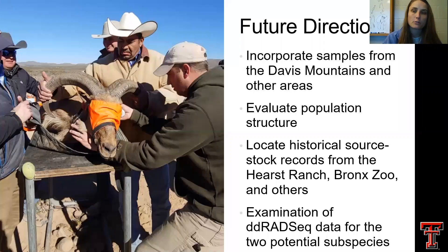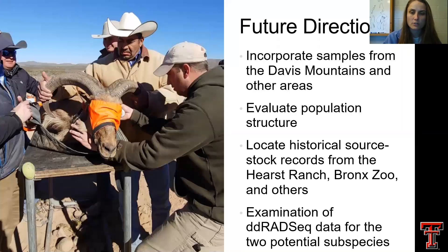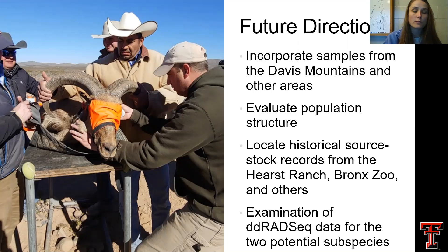Future directions are to incorporate samples from the Davis Mountains, the Glass Mountains, and other areas; evaluate population structure such as FST values using AMOVA as well as the program Arlequin; potentially locate historical data from the Hearst Ranch, the Bronx Zoo, even the Smithsonian; and further examine RADseq data for both potential Aoudad subspecies.